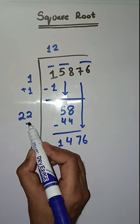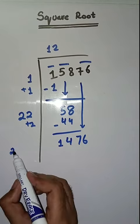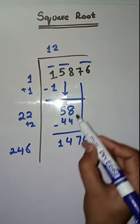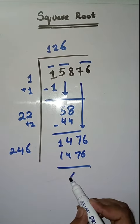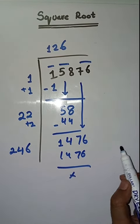Now we will take a number 6. 246 times 6 is 1476. So it completely solved ho chuka hai. So square root of 15,876 is 126.